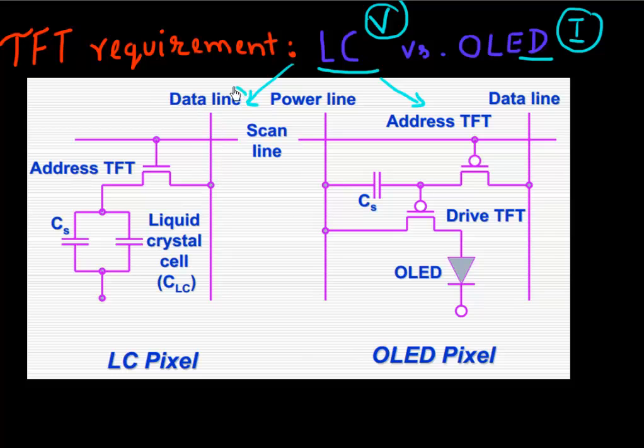For a liquid crystal based display, you have this data line and scan line connected to thin film transistors. Depending on what is the data, if the scan line turns this thin film transistor on, it passes that voltage and charges up this capacitor which maintains this potential on your liquid crystal. Similarly, if you want to reduce this potential to zero, you discharge this capacitor and have zero voltage on your liquid crystal cell.